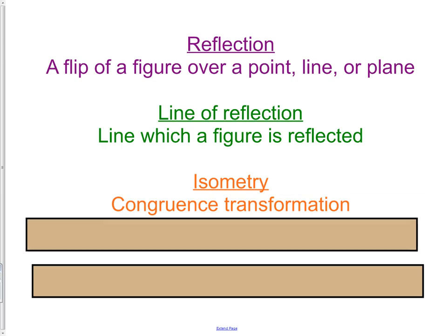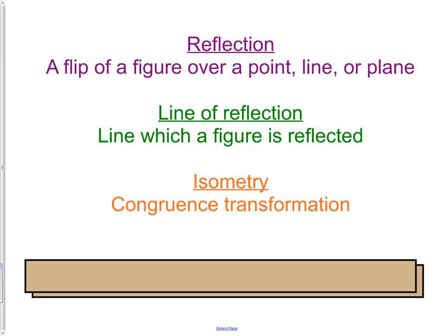Lastly, we have isometry. Isometry simply means it's a congruence transformation. Meaning, after we transform or move our object, it is not going to lose its characteristics. The shape is still going to be the exact same dimensions that it was before the transformation happened, or in this case, the reflection.